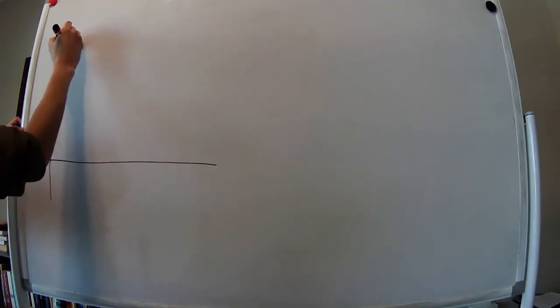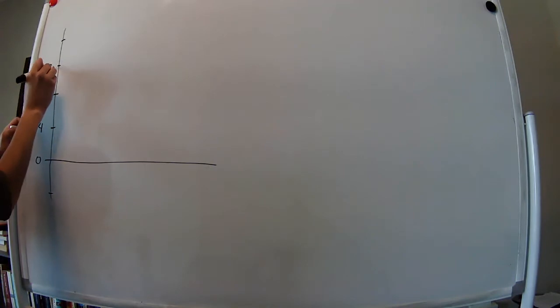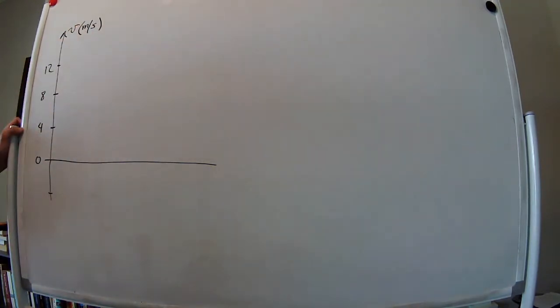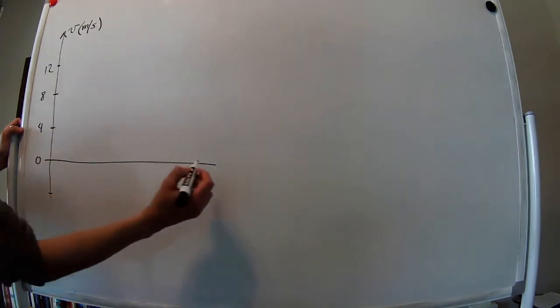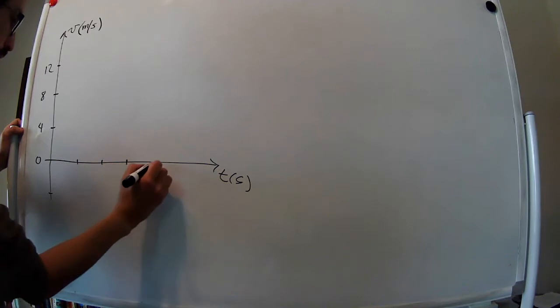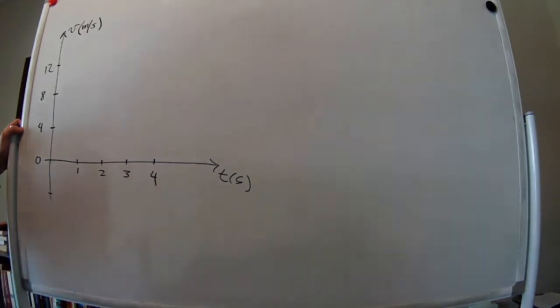Hello. In this problem, we are given a velocity versus time plot. The origin is at 0, with velocity values at 0, 4, 8, and 12 in units of meters per second. Time is on the horizontal axis in units of seconds, ranging from 0 to 4 seconds.